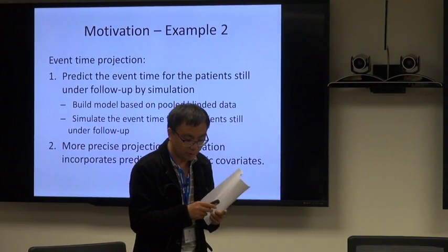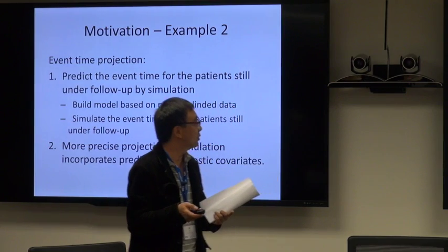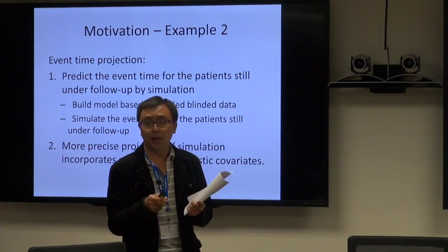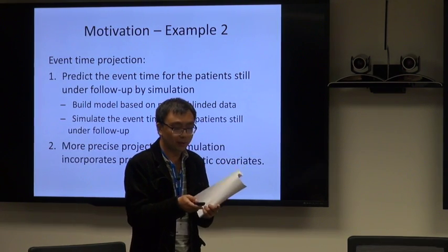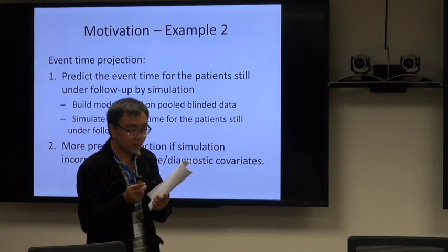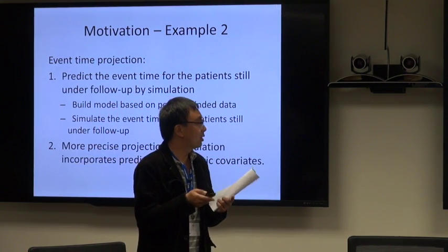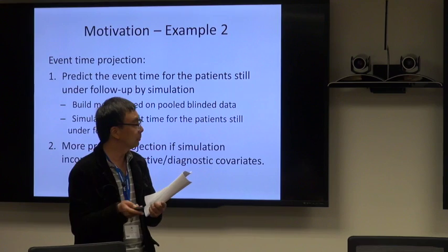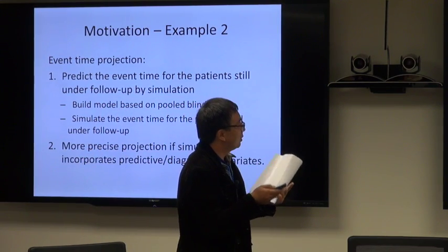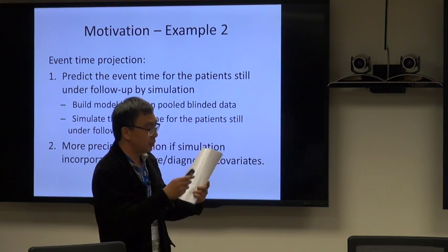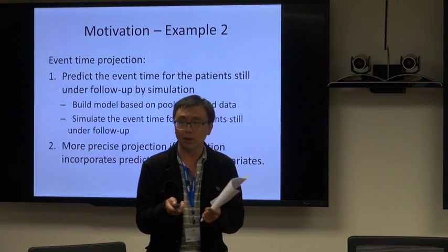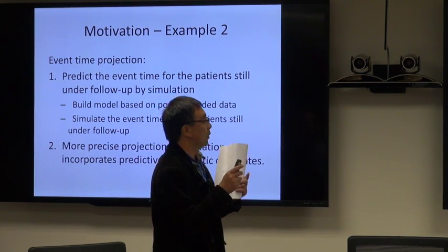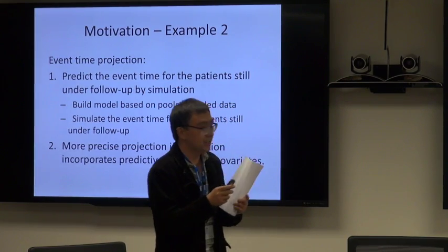The second example is about simulation for trial planning purposes. For example, if we claim we will conduct the primary analysis when we have 200 events, when we already have 70 events, we may ask the question: when will we reach 200 events? A precise answer will help us build up a timeline and allocate resources more efficiently. The approach basically is simple - we can build a model based on pooled data, then use the parameters to simulate event time for patients still under follow-up. Again, we want to emphasize that if the simulation incorporates predictive or diagnostic covariates, our projection may be more precise.